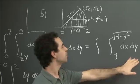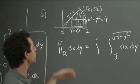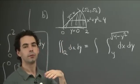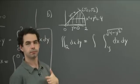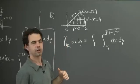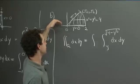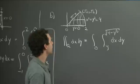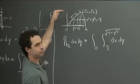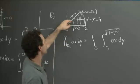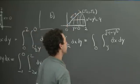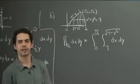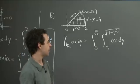For the outer bounds on y, we need the absolute minimum and maximum values of y in this region. The smallest value is along the x-axis, y equals 0. The largest value is at the intersection point (√2, √2), so y equals √2. Therefore the dx dy integral runs: y from 0 to √2, x from y to √(4 - y²).